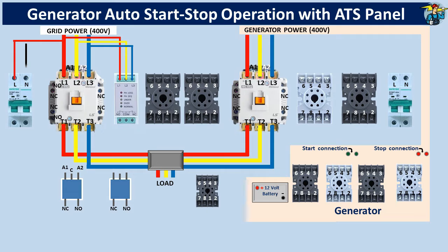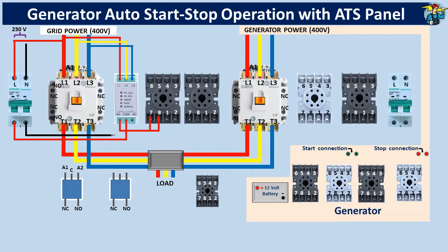Connect a phase line and the neutral line to the 2-pole breaker. From the breaker, the phase line is connected to the common port of the phase failure relay. The normally open port on the left side will connect to terminal number 7 of the grid side, which is timer number 1. Number 7 is connected to the common port number 8. The neutral line is connected to number 2 of timer number 1. Output terminal number 6 goes to the number 7 port of the DPDT relay.